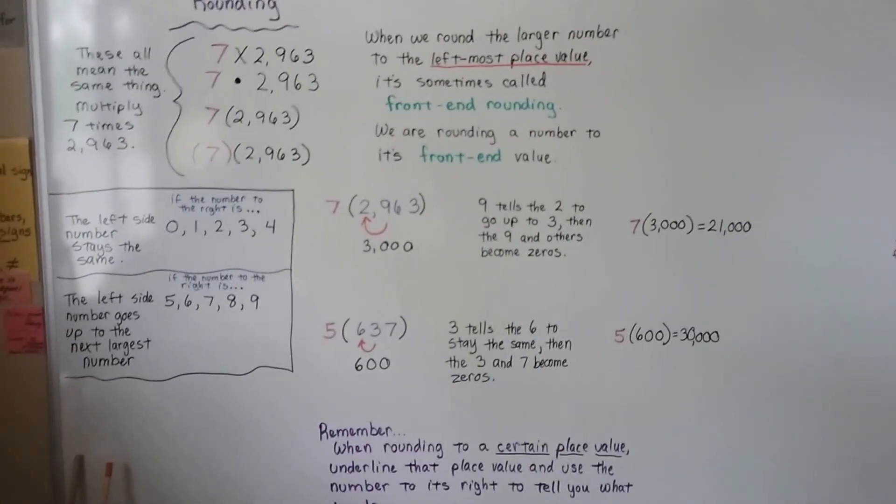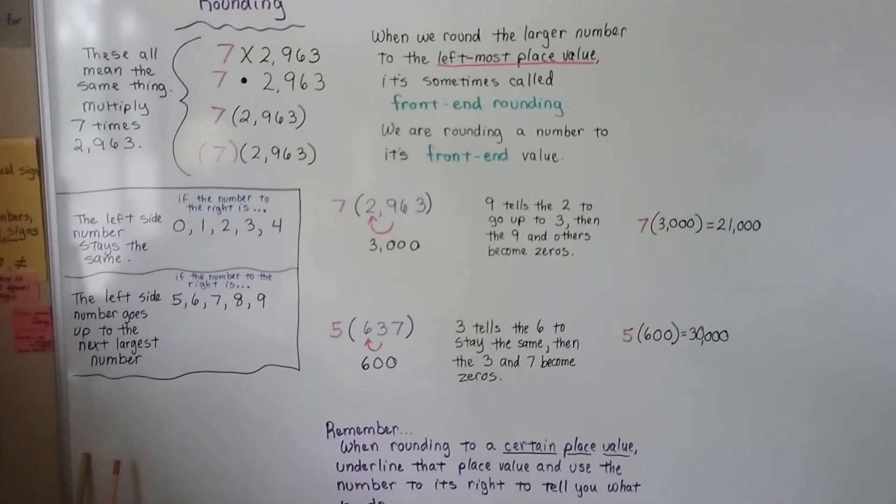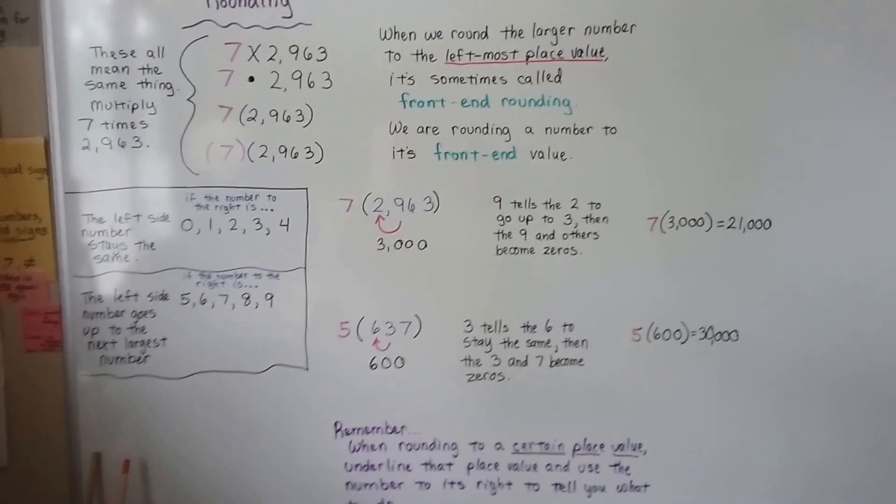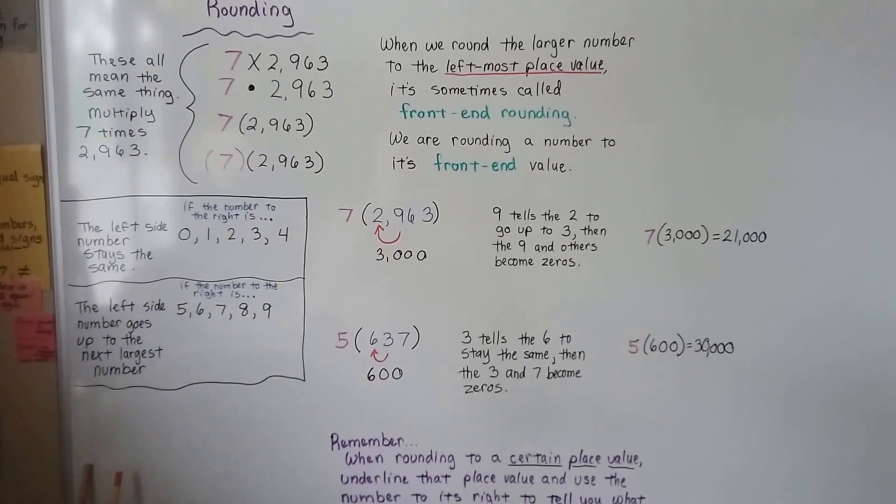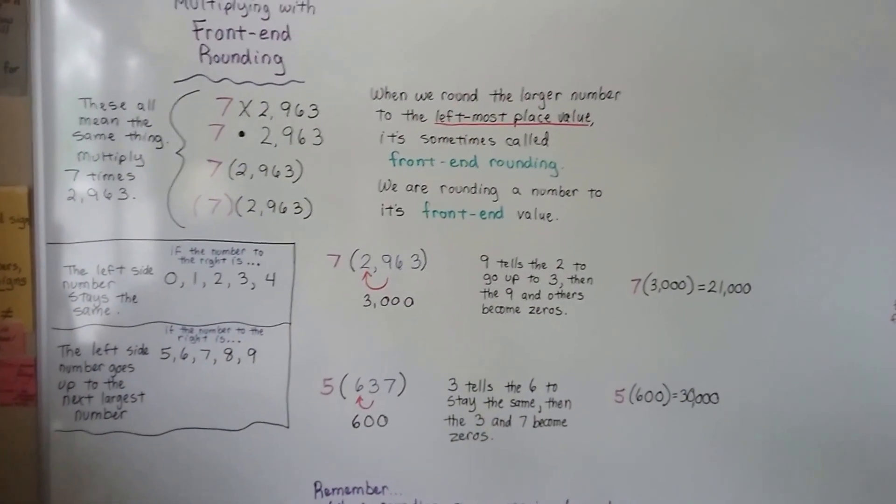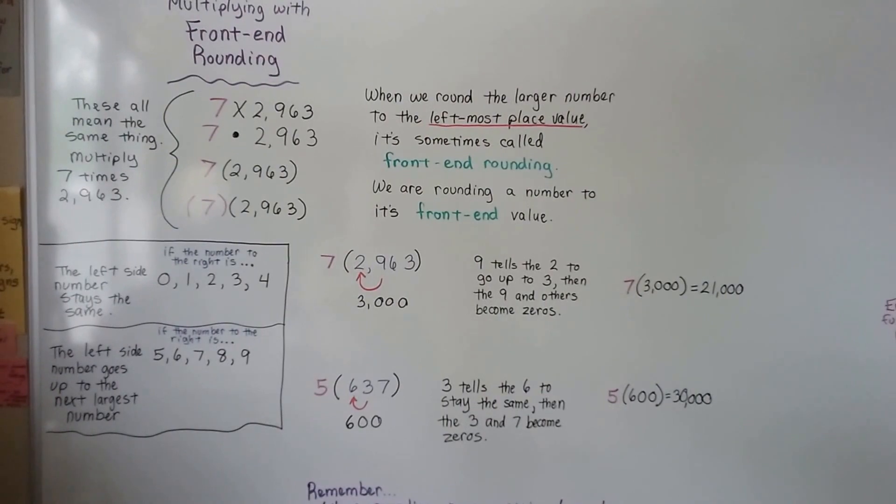When you go to the store and you're trying to figure something out and it says something is $9.99, you can just round it to $10, can't you? And then multiply how many you need. I'll see you next video. I hope this was helpful and I hope you're doing well. Bye.